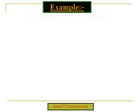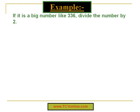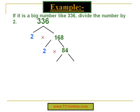Now let's see how to find prime factors of a bigger number with this example. We need to find the prime factors of 336. Let's start dividing 336 by the first prime number, that is 2. When we divide 336 by 2 we get 168. Dividing 168 by 2 gives us 84. Dividing 84 by 2 gives us 42. Dividing 42 by 2 gives us 21. Now 21 is not divisible by 2, so the next prime number is 3. Dividing 21 by 3 gives us 7.